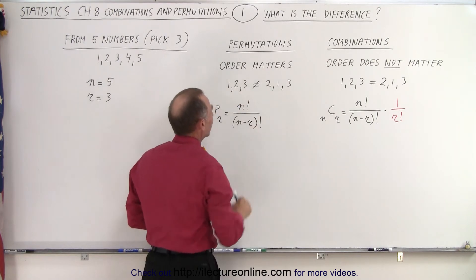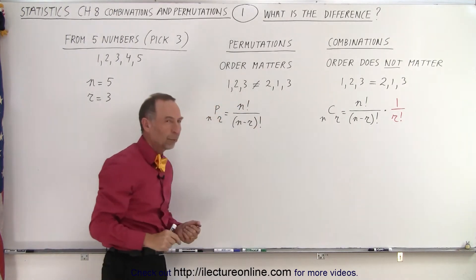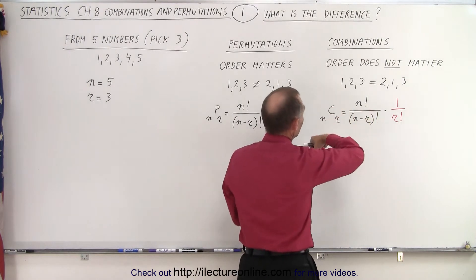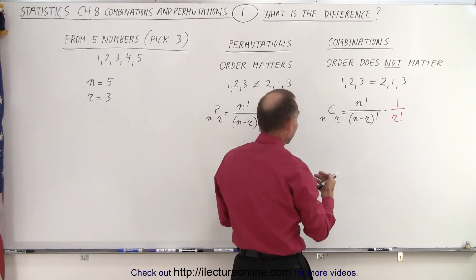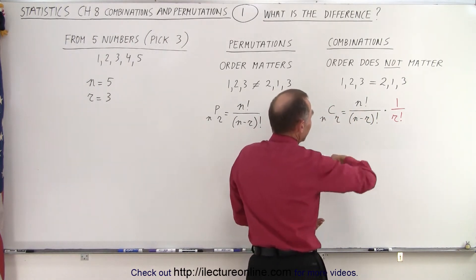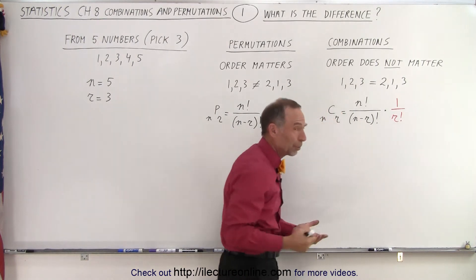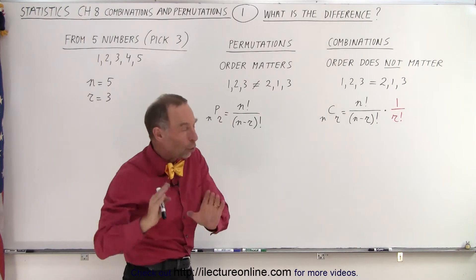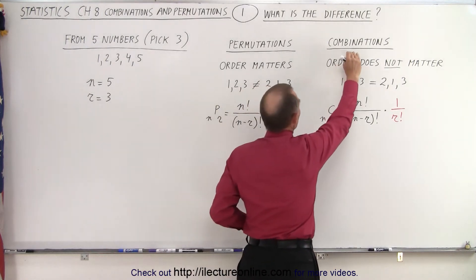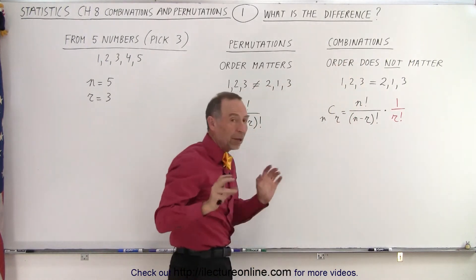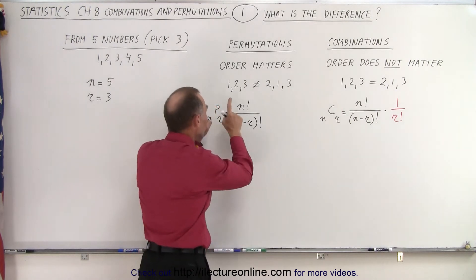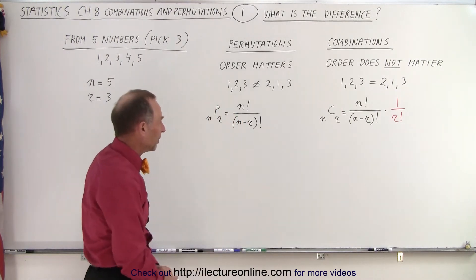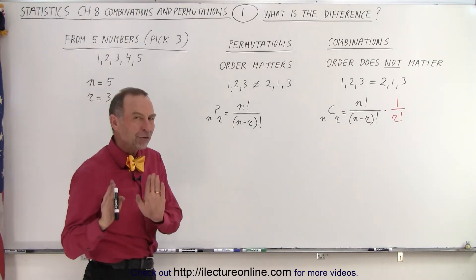But when it comes to a combination, order doesn't matter. If I pick out number one, then number two, number three, that's exactly the same as if I pick number two first, then number one, and then number three, because in the end I end up with the same three numbers. That's all that matters when we're dealing with combinations — it's which numbers do I end up with, not in what order do I pick them or what order do I put them.